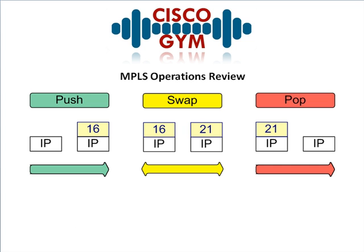With a push, the router is going to receive an unlabeled packet and it's going to have a label assigned to that forwarding equivalents class, which in most cases is just the prefix. So it says I know how to reach this prefix but to do so I'm supposed to use label 16, so I'm going to push label 16 onto the MPLS stack and then route it out the interface specified in my label forwarding information base, or LFIB.